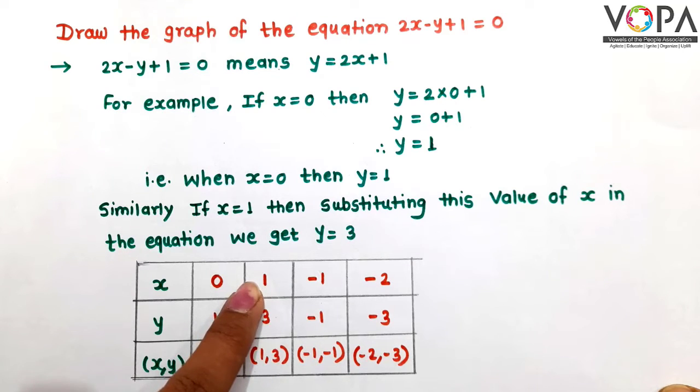When x is equal to 1, then y is equal to 3. Then, the coordinates of the point are (1, 3).